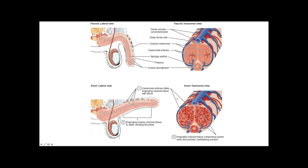In the erect state, the smooth muscle relaxes, causing blood to fill the caves of the corpus cavernosum. Now we have a lot of blood coming in. As blood fills, the penis becomes erect and more rigid, and it starts compressing those veins. When it compresses the veins, there's no more leakage — the blood stays in.